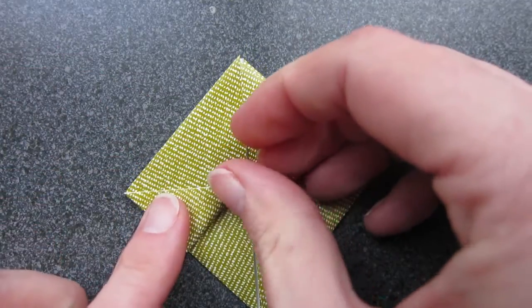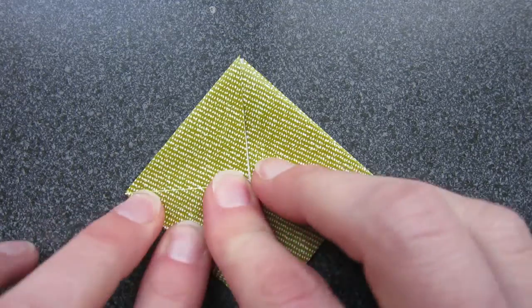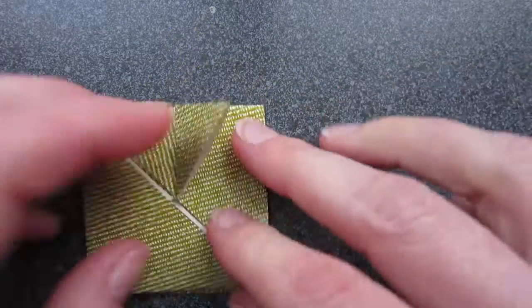Turn the paper 90 degrees and fold the top layer so it makes a small triangle. Do this four times.